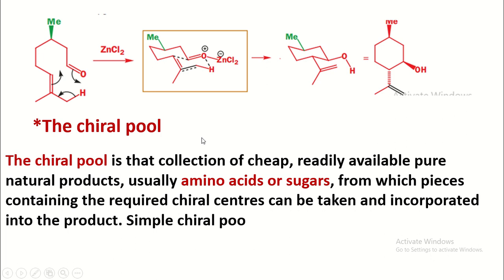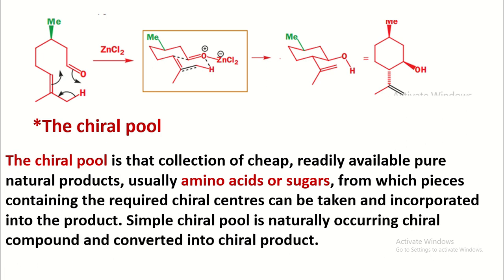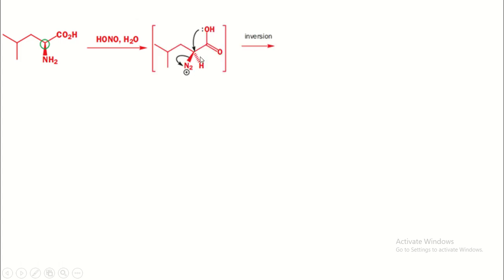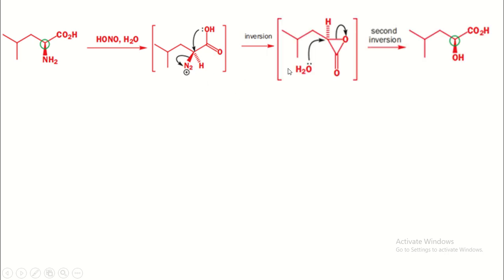Let us discuss the chiral pool reactions one by one. In this first reaction, diazotization takes place to form the diazonium ion (N₂⁺). Then the carboxylic acid acts as a neighboring group participation (NGP) to attack the carbon as N₂ is removed. Then S₂ molecule attacks the lactone ring to form the product. The product is optically active because it is obtained from the amino acid, which is from the chiral pool.